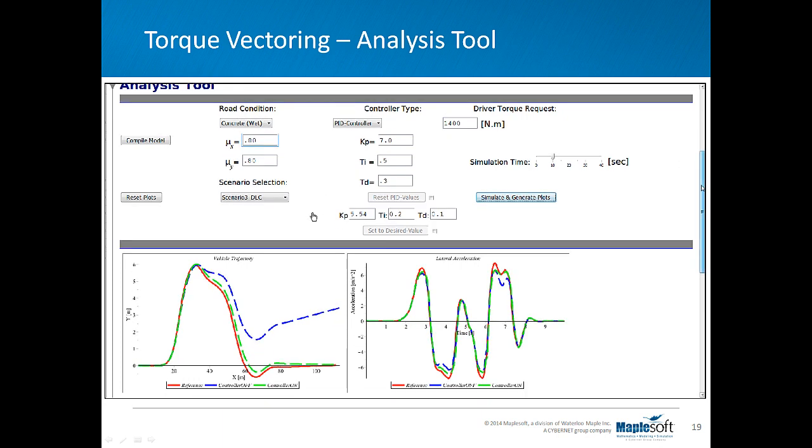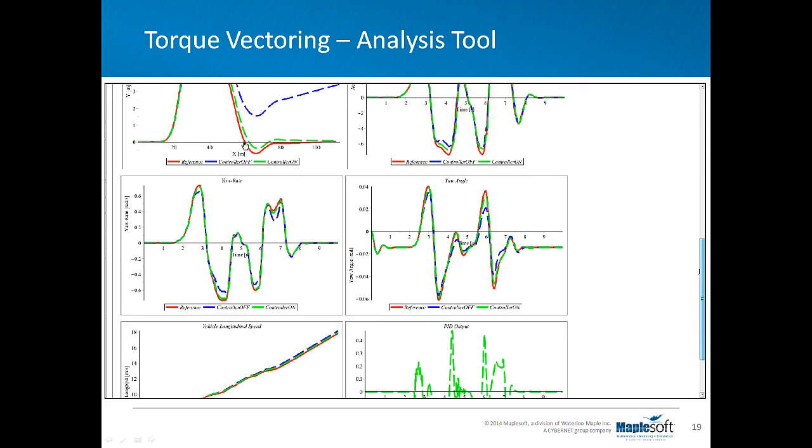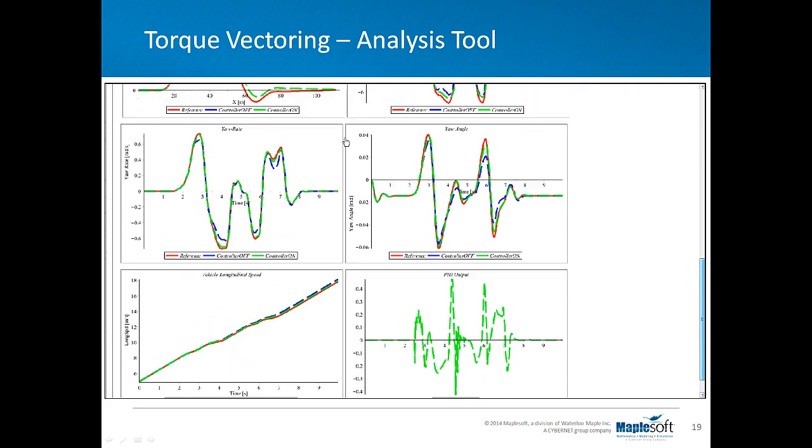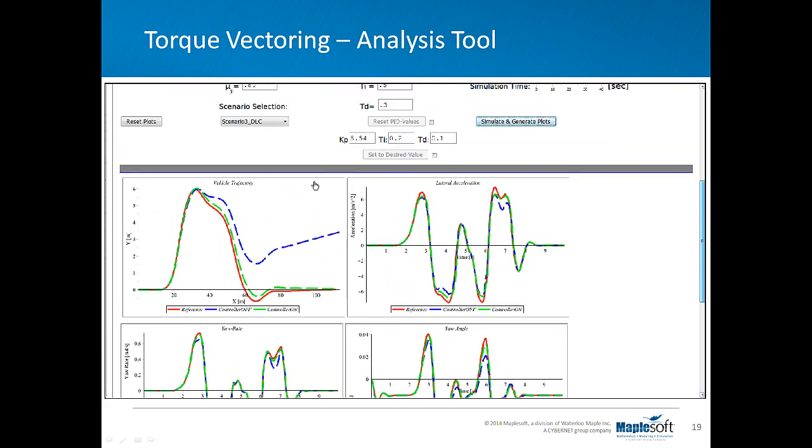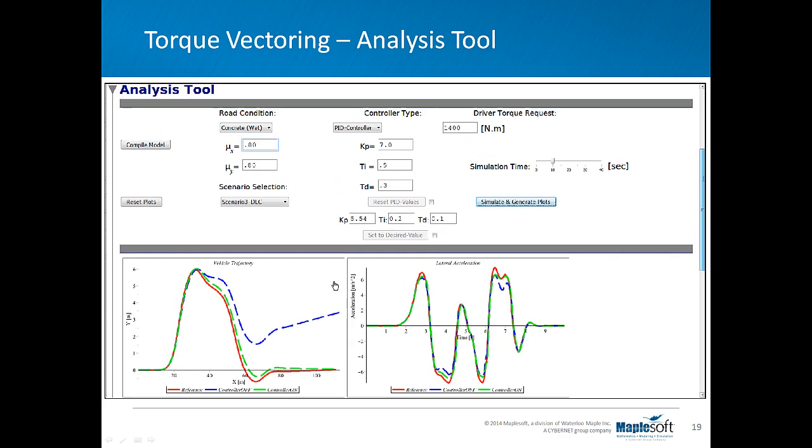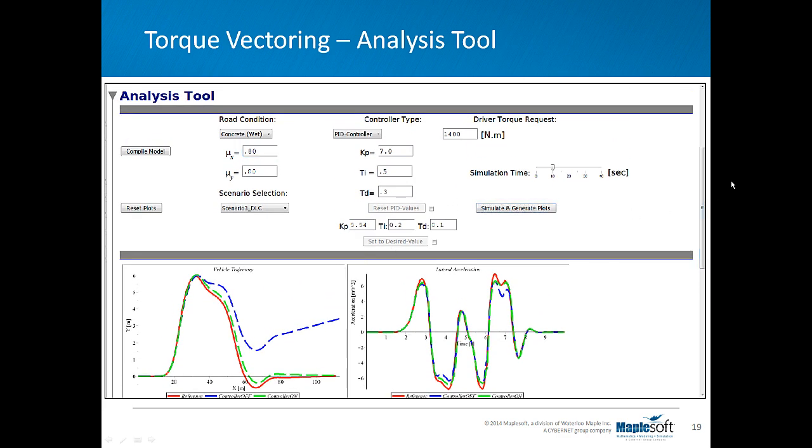While changing the friction coefficients to the lower number, even the vehicle with the controller off deviates more from the reference path.